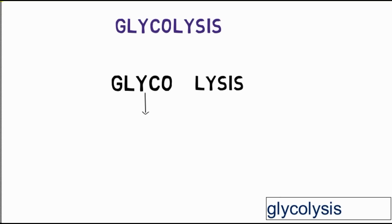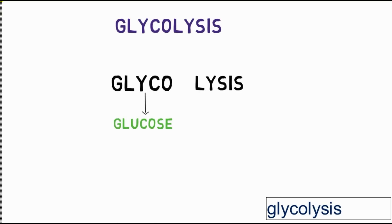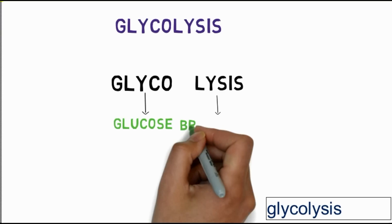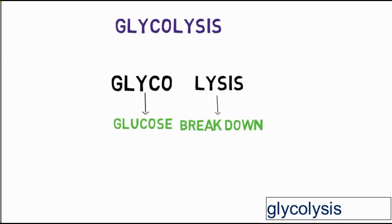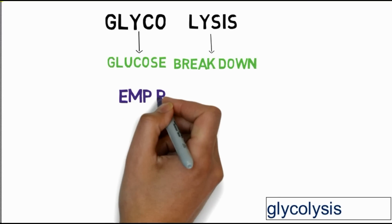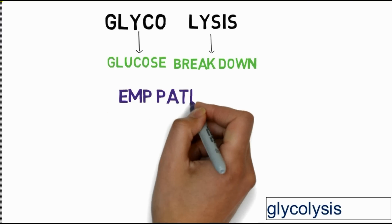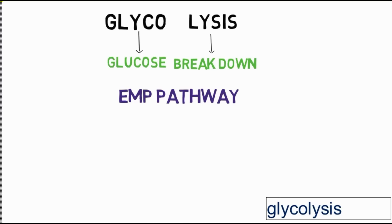First of all, what is glycolysis? It comes from two words: glyco and lysis. Glyco means glucose molecule and lysis means degradation or breakdown — so glycolysis means degradation of the glucose molecule. It is also called the EMP pathway, discovered by Emden, Meyerhof, and Parnas.